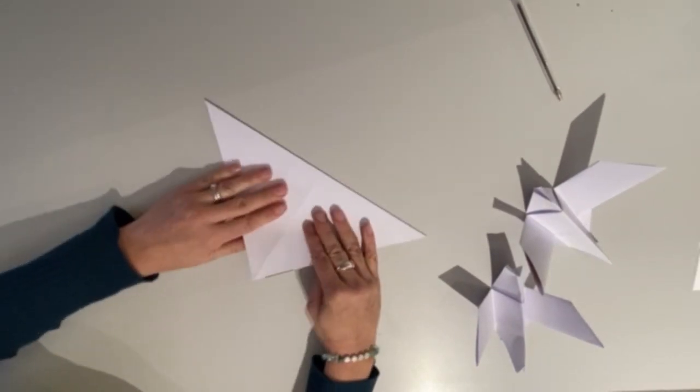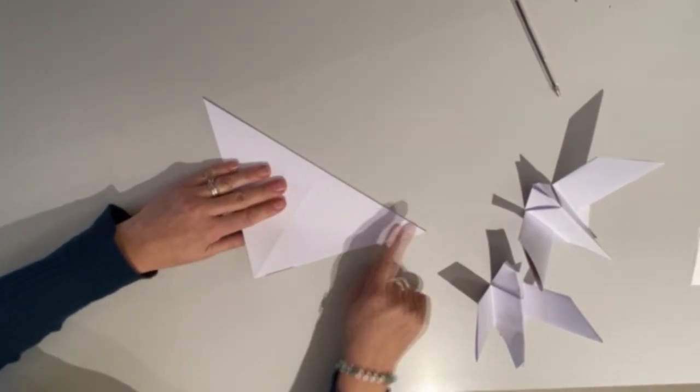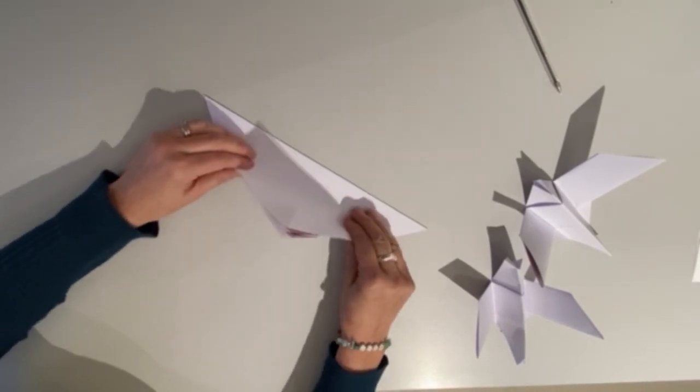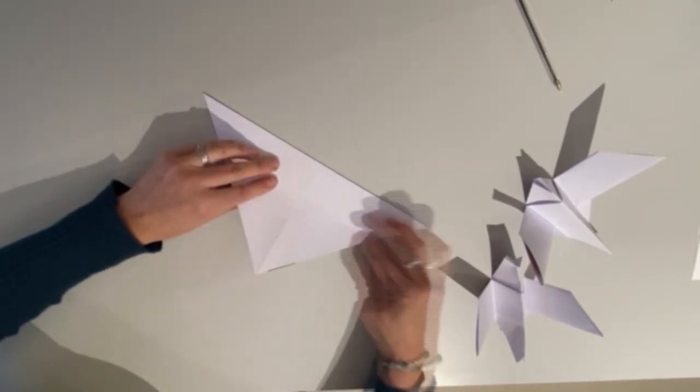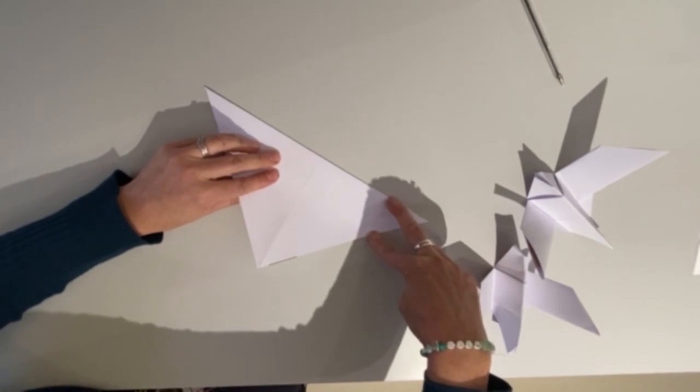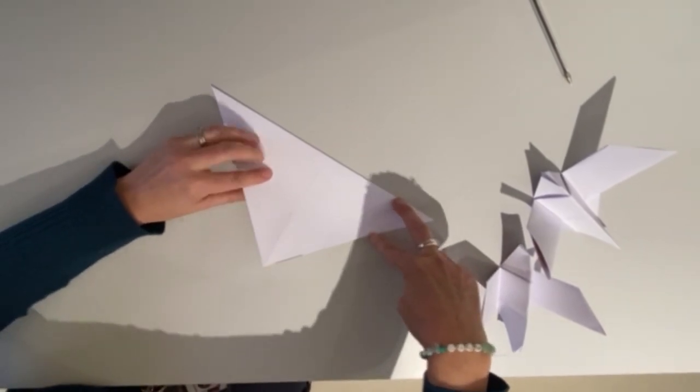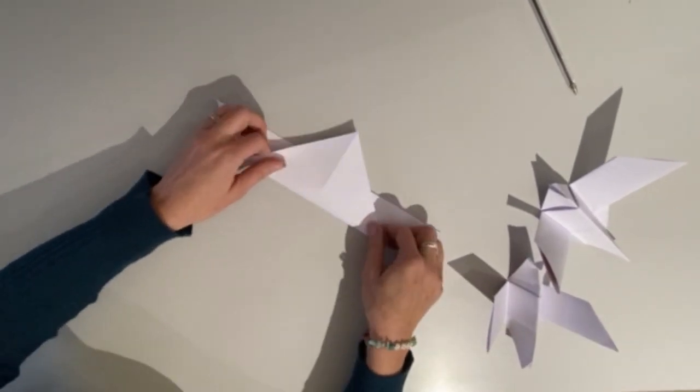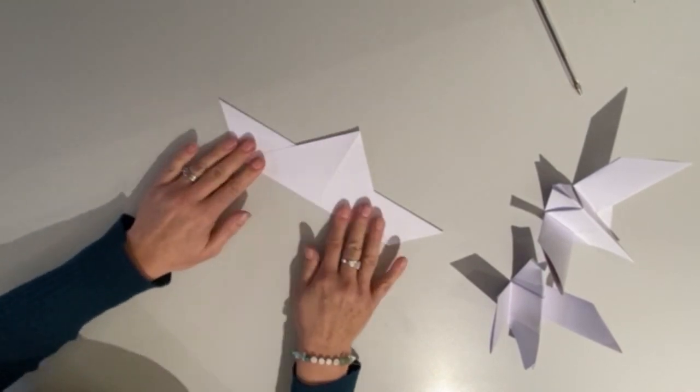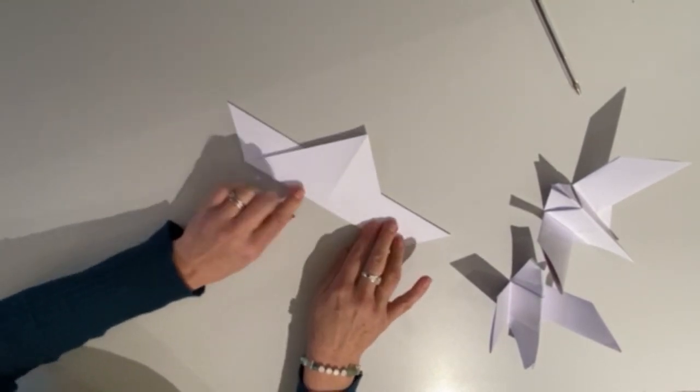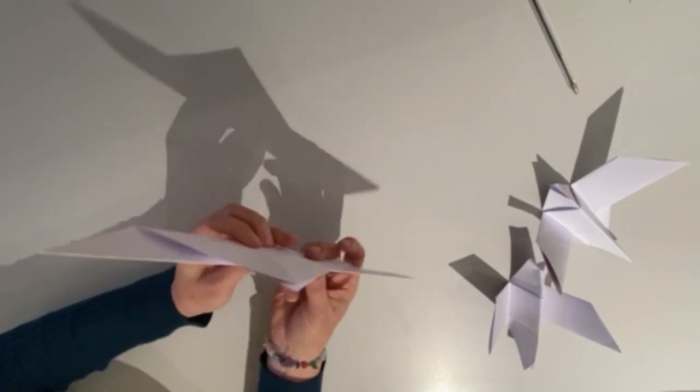You're then going to have this long edge away from you and you're going to fold the top triangle over, leaving about four centimeters here. And then that looks like a little boat.